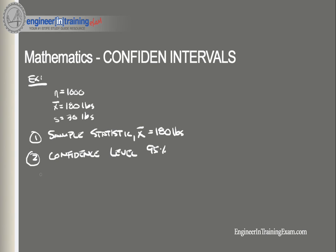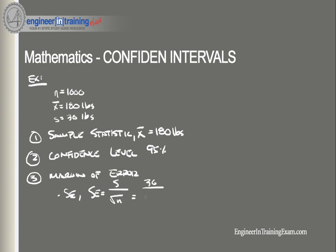Step three, we need to find the margin of error. First we find the standard error. Since we are using the mean as our sample statistic, SE equals s over the square root of n, which is 30 divided by the square root of 1,000, which equals 0.95.